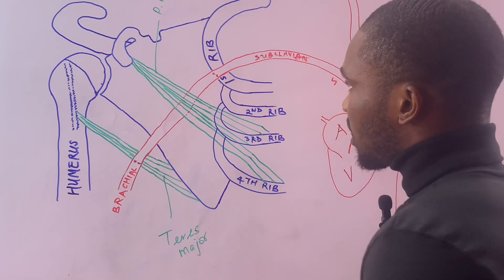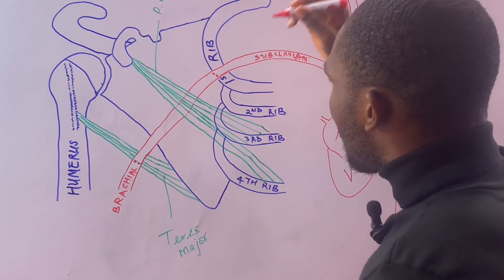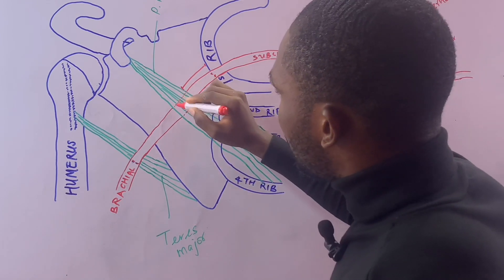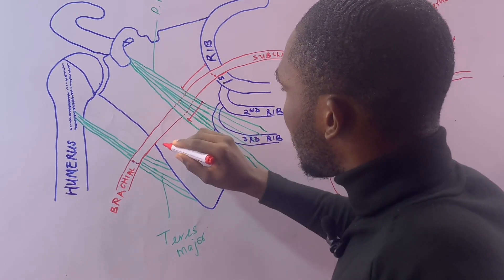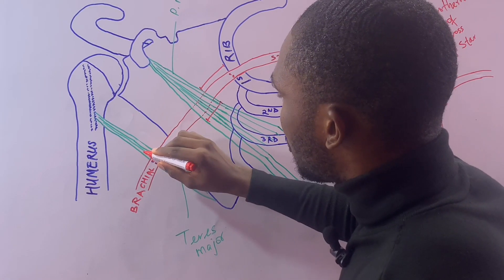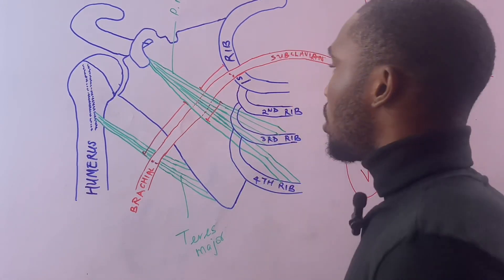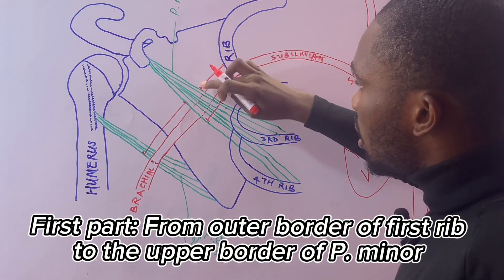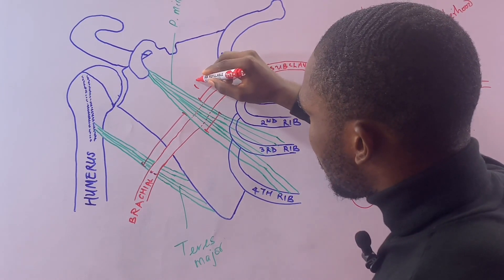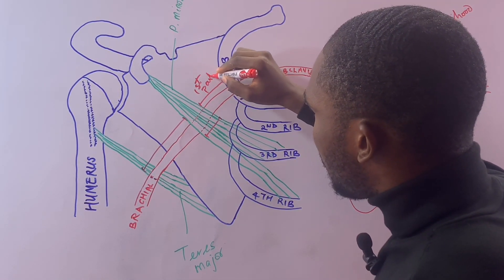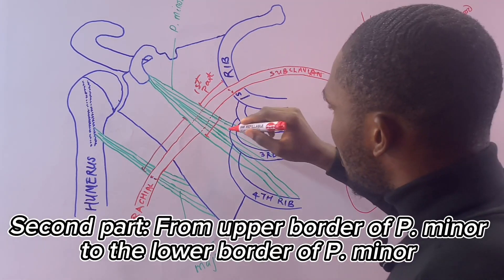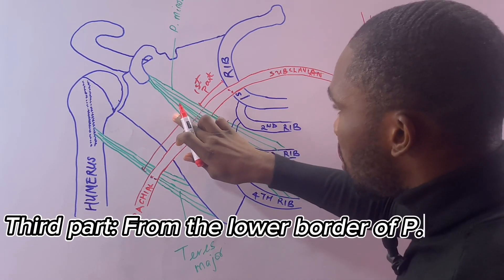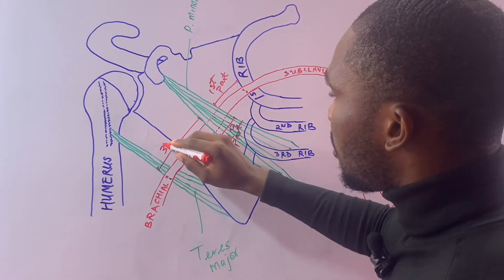The pectoralis minor divides the axillary artery into three parts. The first part runs from the outer border of the first rib to the upper border of pectoralis minor. The second part runs from the upper border to the lower border of pectoralis minor. The third part runs from the lower border of pectoralis minor to the lower border of teres major.